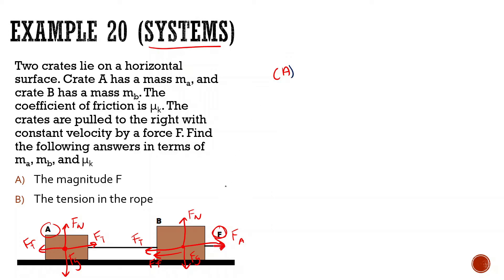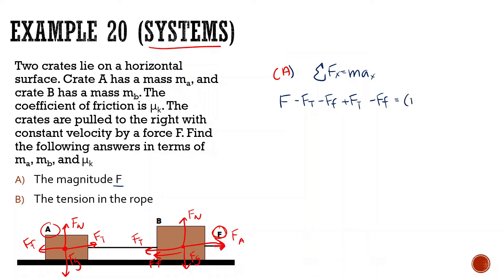So for F — since it's in the x direction, let's do the sum of all forces in x equal to mass times acceleration x. We have F minus force of tension minus force of friction, plus force of tension minus force of friction, equal to mA plus mB times acceleration.